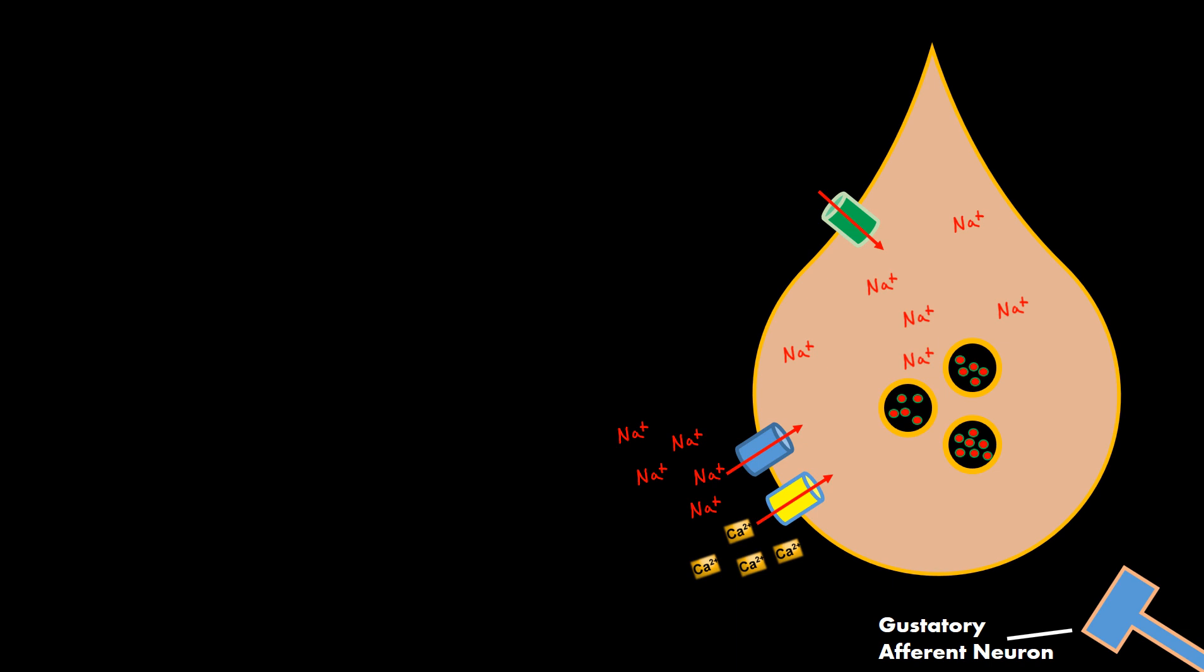And when that happens we have a voltage change and we have graded potentials, action potentials, but specifically in this gustatory cell we're only going to have a graded potential. So once a graded potential happens you'll see that voltage dependent gates such as the voltage gated sodium channel will then open and let more sodium diffuse in.